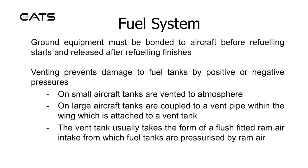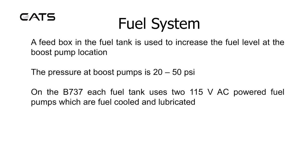On small aircraft, tanks are vented to atmosphere. On large aircraft, tanks are coupled to a vent pipe within the wing which is attached to a vent tank. The vent tank usually takes the form of a flush-fitted ram air intake, from which fuel tanks are pressurised by ram air.